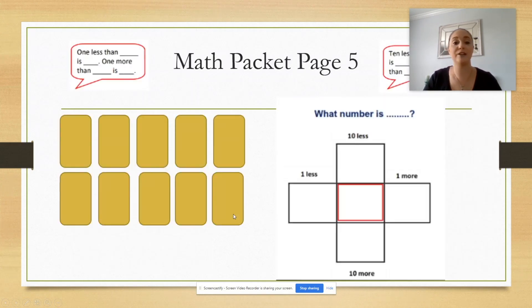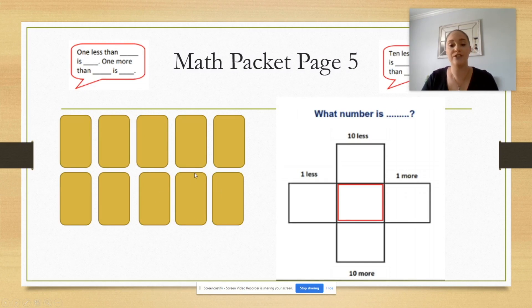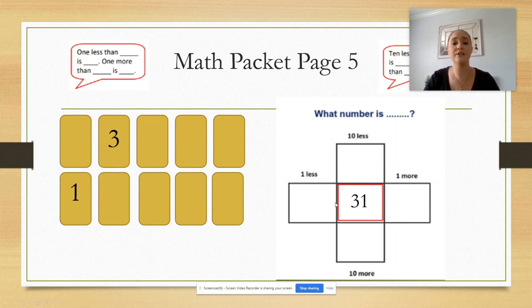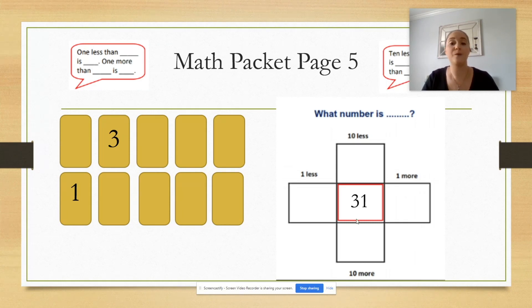Now you're ready to take a look at math packet page 5. I have zero through nine on my digit cards. I'm going to flip over two — I flipped over three and one, so the two-digit number I created was 31. You're going to do the same thing: flip over two of your digit cards, write that number in the center box, then use your math tools or mental math to solve for one less, one more, 10 less, and 10 more.